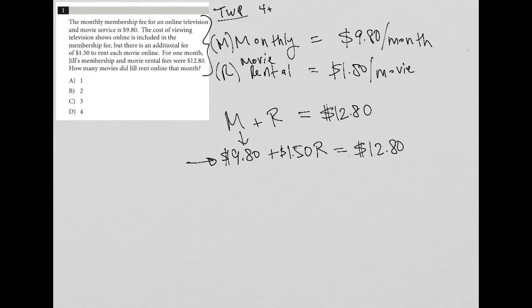So the last sentence says, how many movies did Jill rent online that month? So basically, what is the value of R?